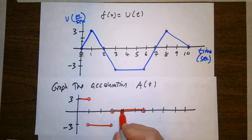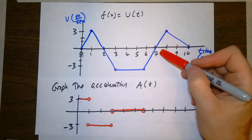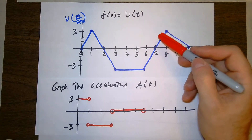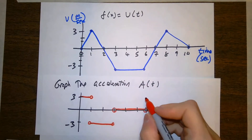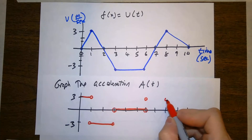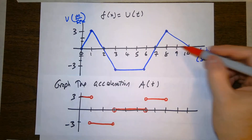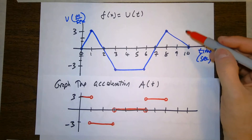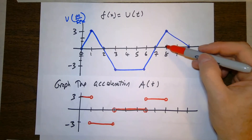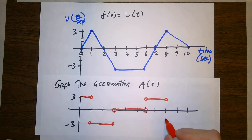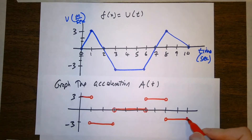Between six and eight seconds, the slope of the velocity is rise six, run two, so a positive three. Then between eight and ten seconds, it's still a line with a constant slope: rise negative three, run two, giving negative three halves, which is negative 1.5. So there's my acceleration function — the derivative of the velocity.